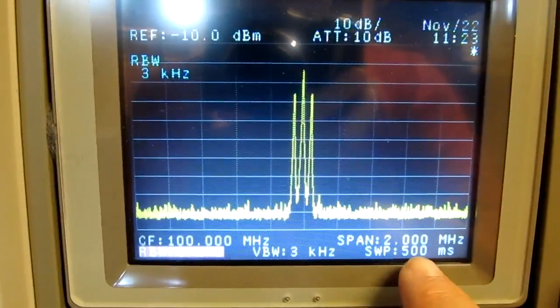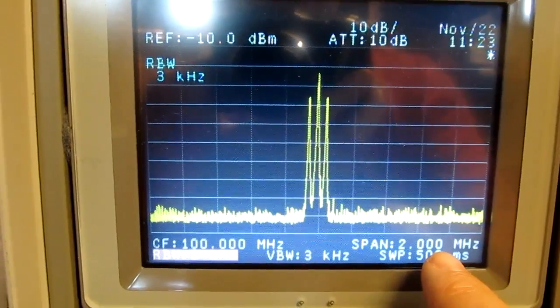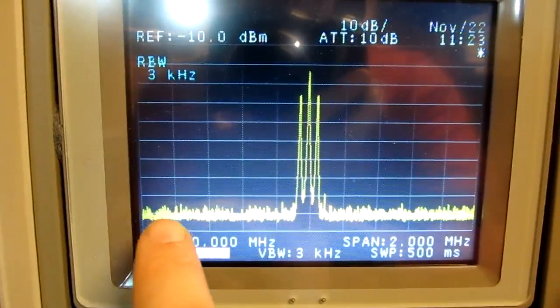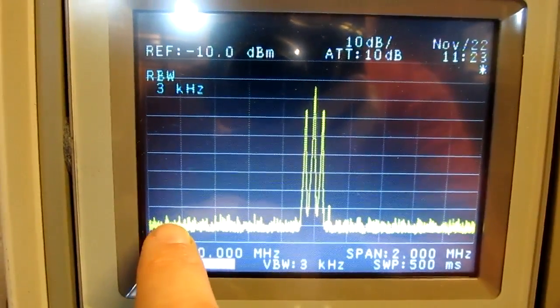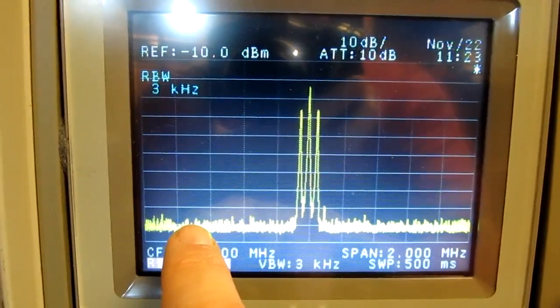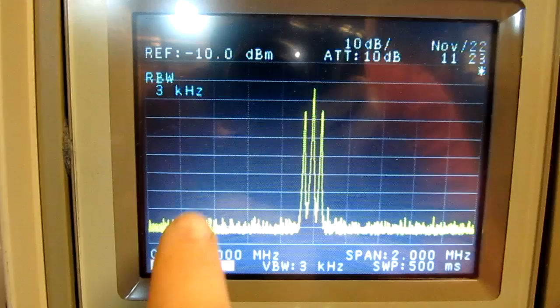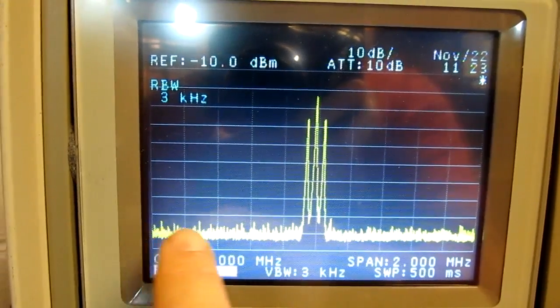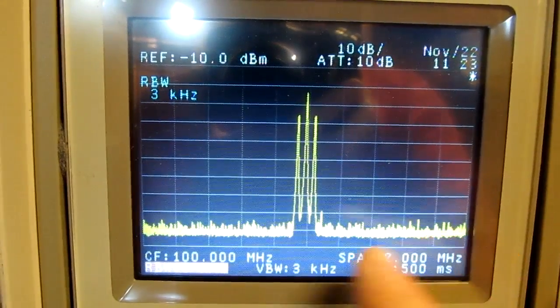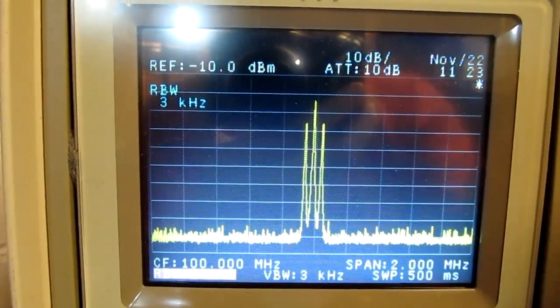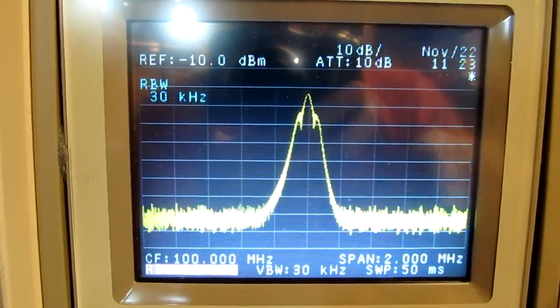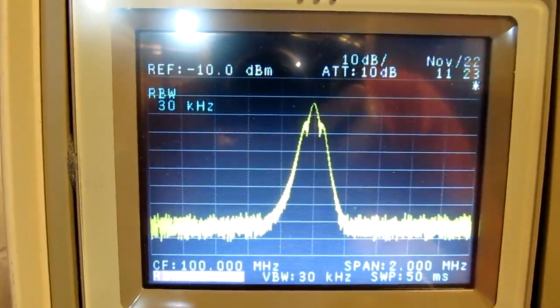You'll also notice that the sweep speed has gotten slower. At the narrow resolution bandwidth you're going to get a slower sweep because the instrument has got to take a sweep slower so it doesn't miss anything. And it has to give the narrower filter time to charge. That's why narrow resolution bandwidths lead to longer sweep times. Otherwise we'd use it all the time. So that's what resolution bandwidth looks like on the spectrum analyzer.